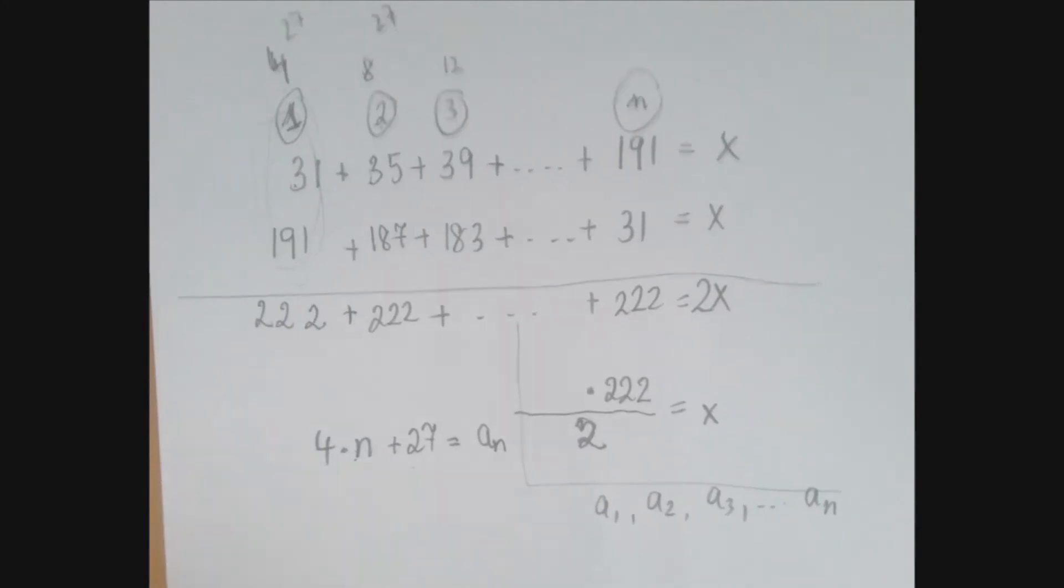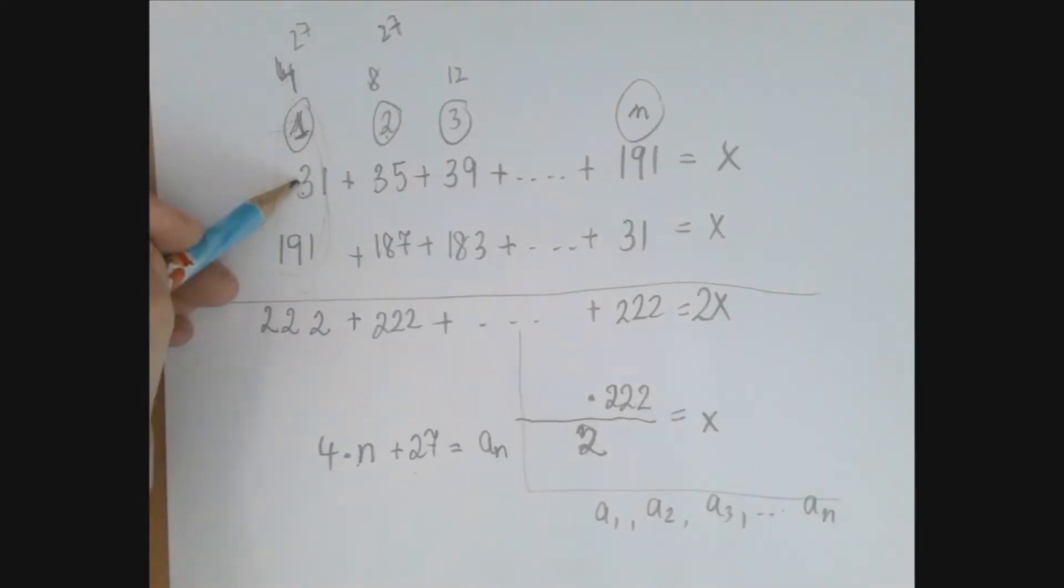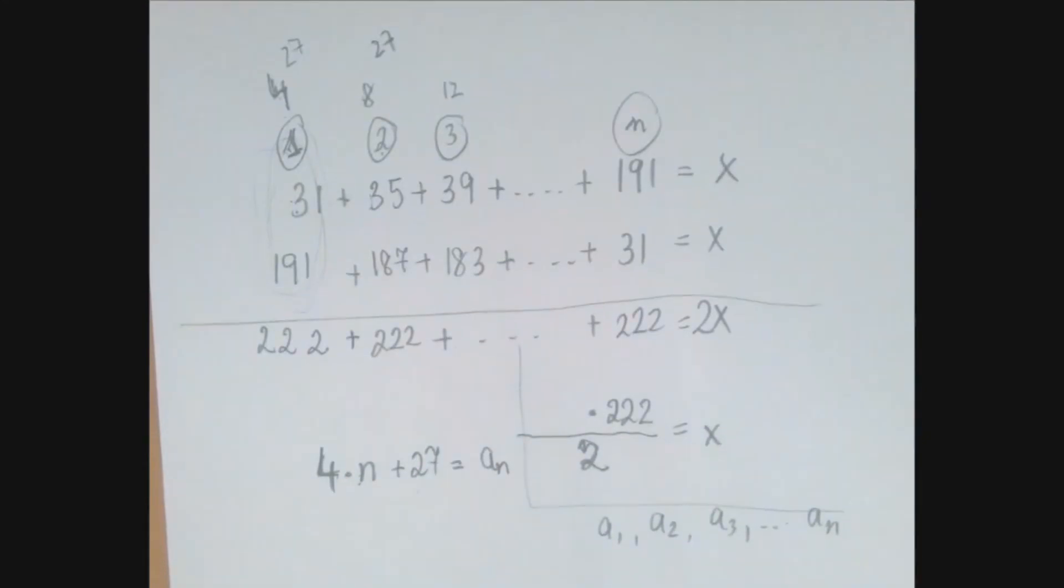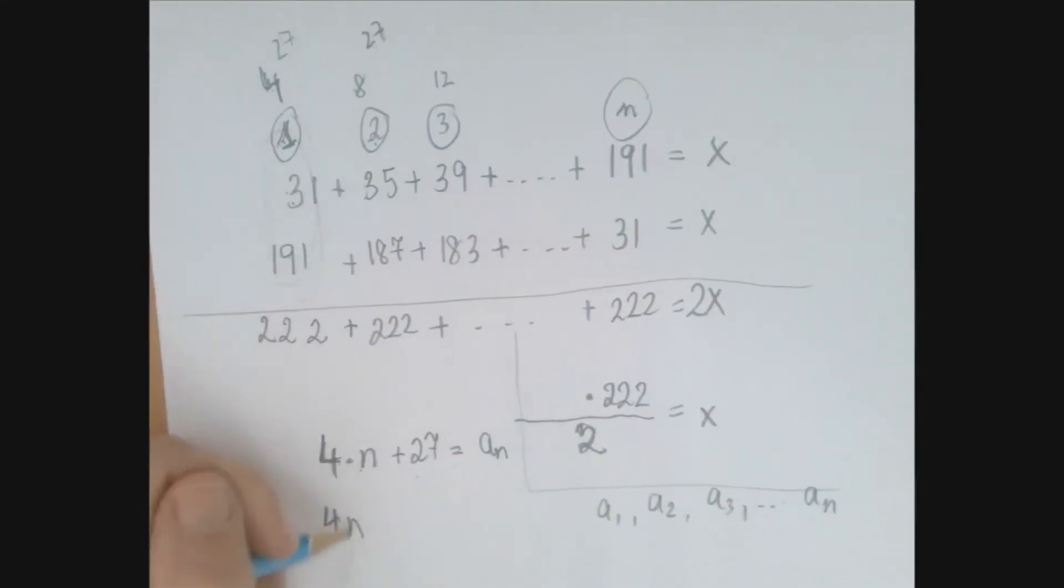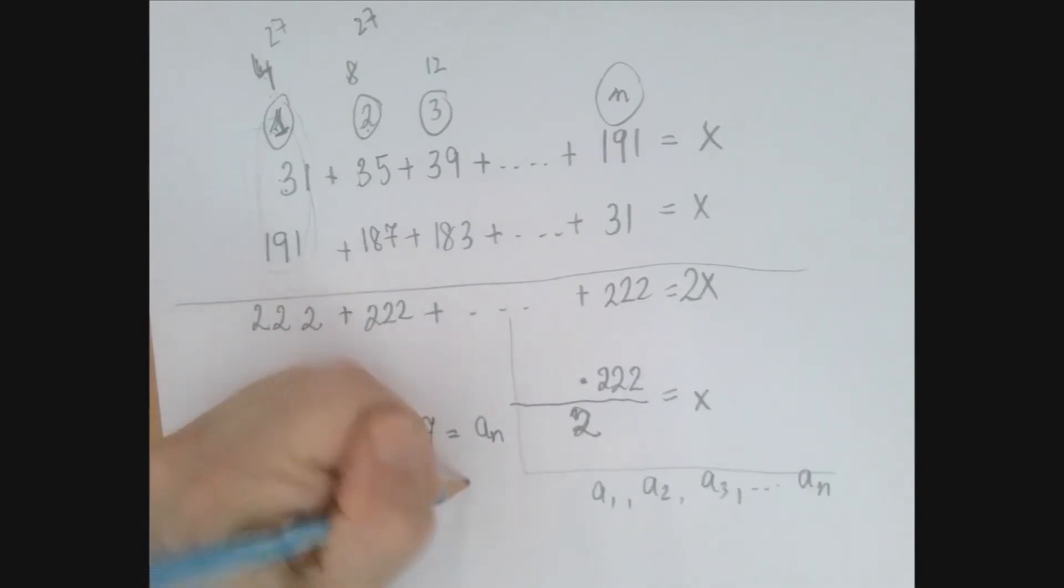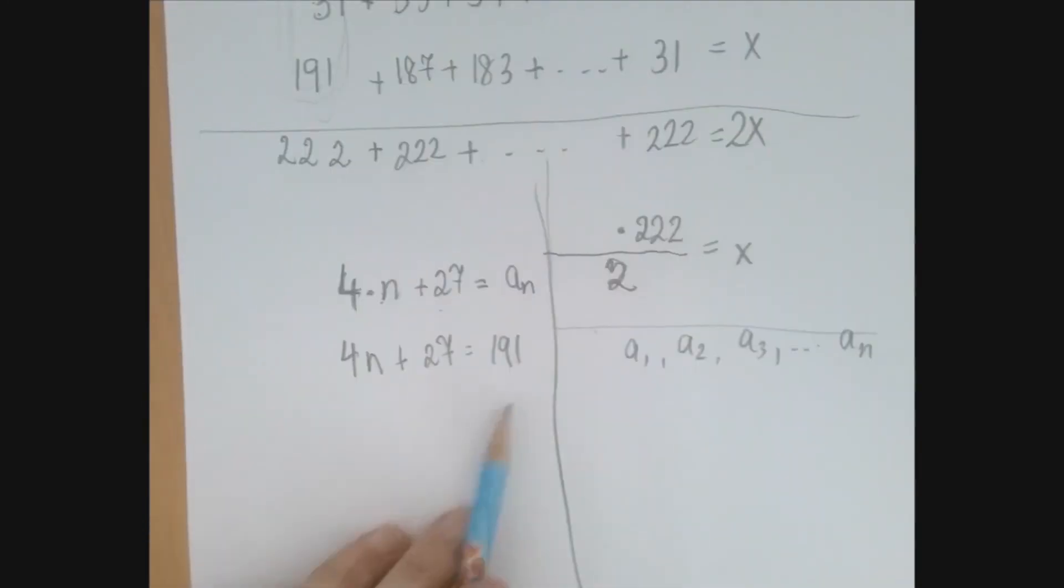Once we figured out the connection between the label and the number itself, we can use that backwards to figure out what number comes with 191. And that's simply just saying what is n, so that four times n plus 27 is 191. This is a two-step equation for n.